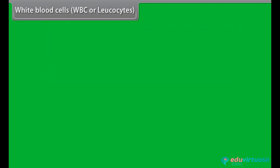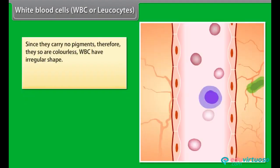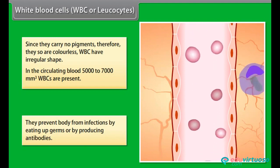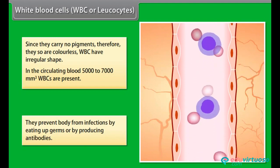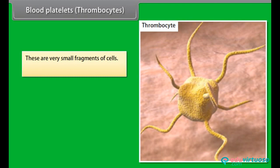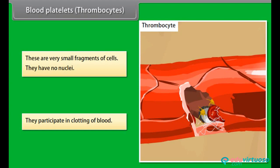White blood cells (WBCs or leukocytes) carry no pigments and are therefore colorless. WBCs have an irregular shape. In circulating blood, 5,000 to 7,000 per mm³ WBCs are present. They prevent the body from infections by engulfing germs or by producing antibodies. Blood platelets (thrombocytes) are very small fragments of cells with no nuclei, and they participate in the clotting of blood.